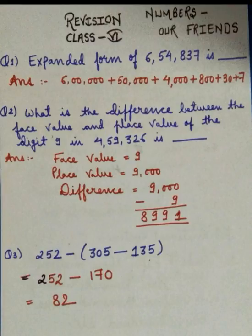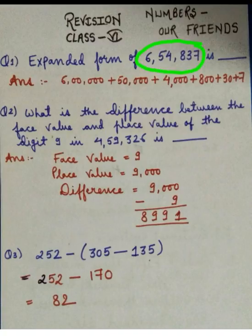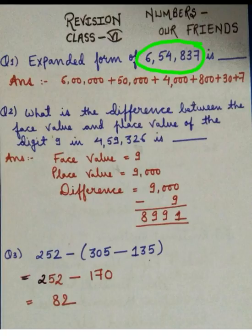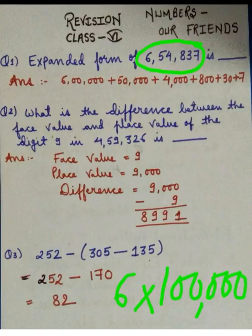The very first question is: write the expanded form of 654,837. Writing expanded form means writing or expressing the given number as the sum of place values of all the digits in it. So here, the very first digit is 6. The place value of 6 is lakh. We will multiply 6 by 1 lakh and we will get 6 lakh.